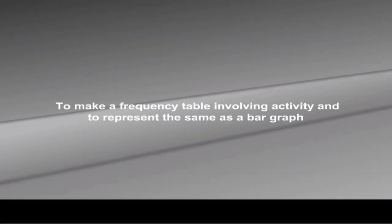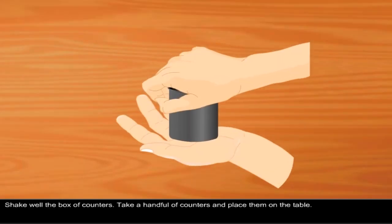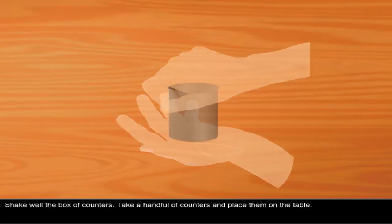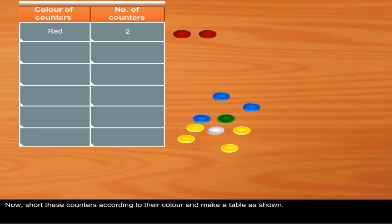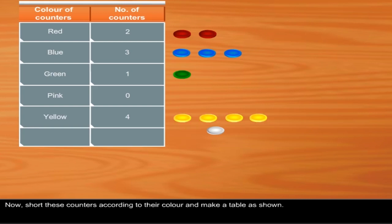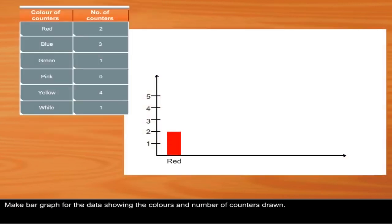The activity here is to make a frequency table involving an activity and represent the same as a bar graph. Shake a box of counters, take a handful and place them on the table, then sort them according to their color and make a table. Then make a bar graph showing the colors and number of counters drawn.